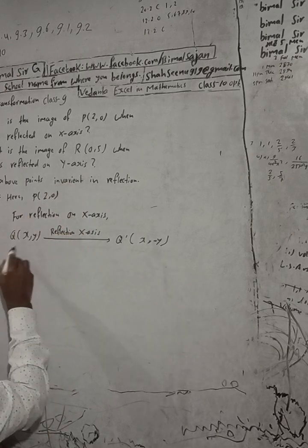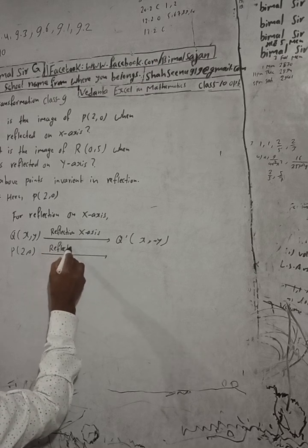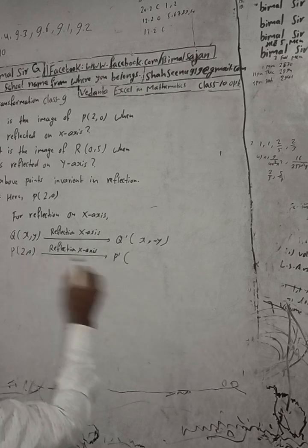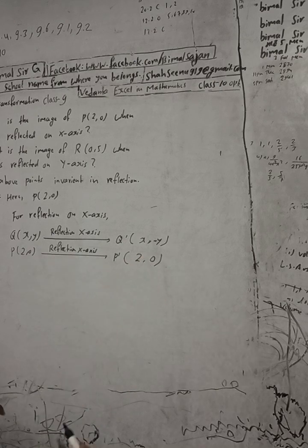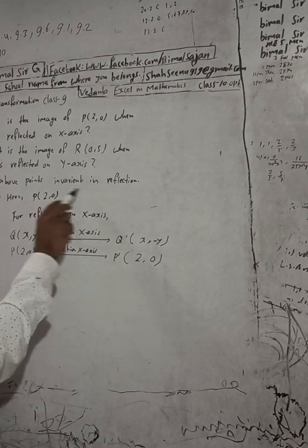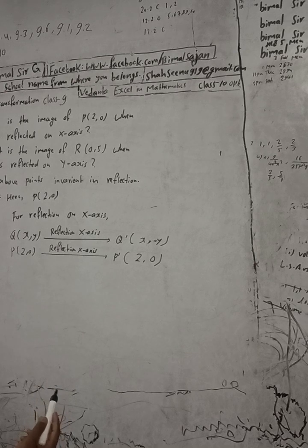So (2, 0) is the reflection of P on the x-axis. P dash is (2, 0), and since y is 0, it becomes the same — minus 0 equals 0. The image is the same. These points are invariant in reflection because the points lie on the line of reflection.